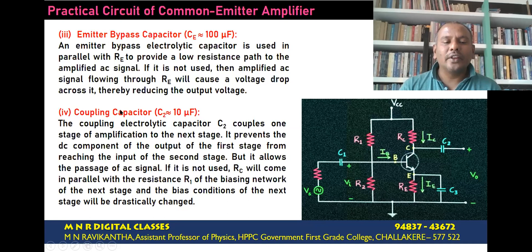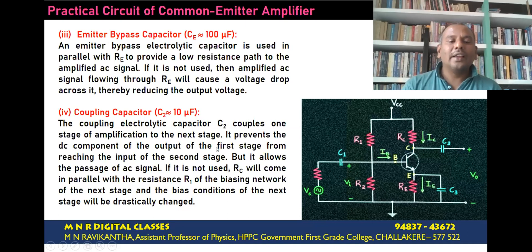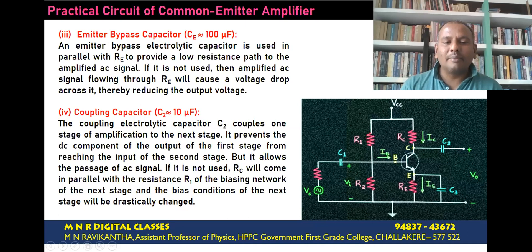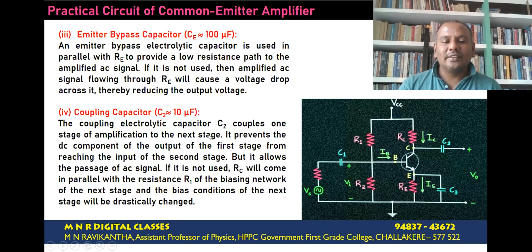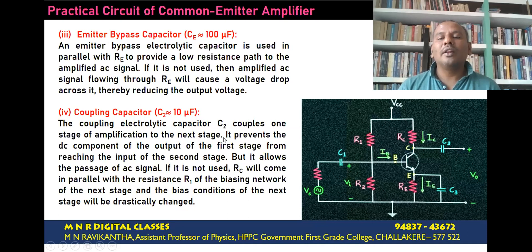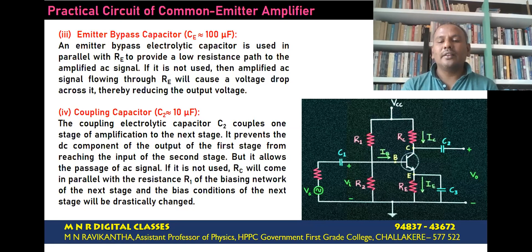The fourth circuit component is the coupling capacitor, represented by C2. C2 is an electrolytic capacitor having a capacitance of 10 microfarads. This is used to couple one stage of amplifier to the next stage. Most practical amplifier circuits are multi-stage, so in order to couple the signal from one stage to the next stage, we use coupling capacitor C2.